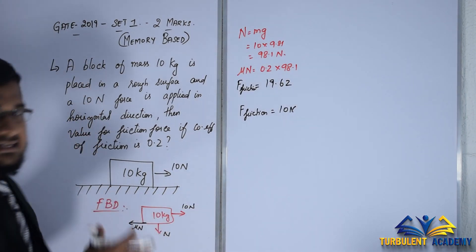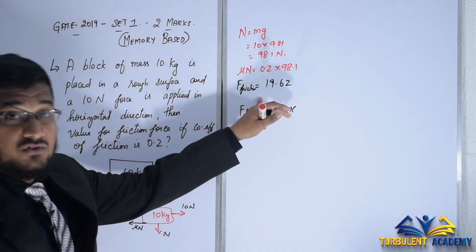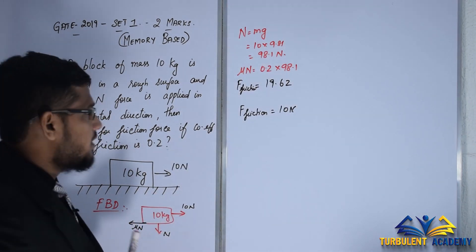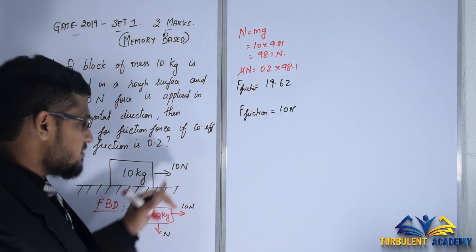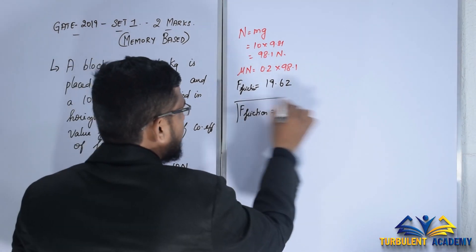In this case, this 10 newton force is getting resisted by friction force, which has a maximum value of 19.62. It will not allow it to move. But this 10 newton force is being resisted, and as a result, at this particular point of time, friction force is going to be 10 newton.